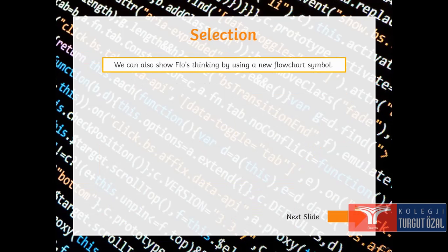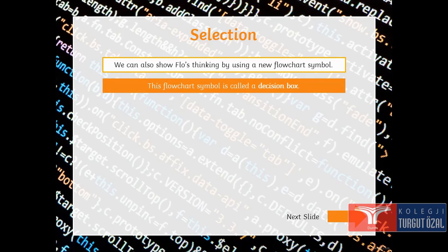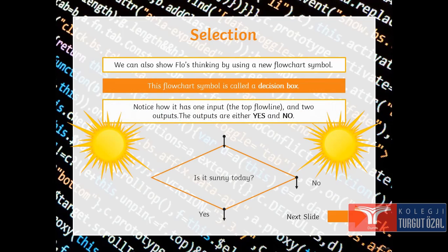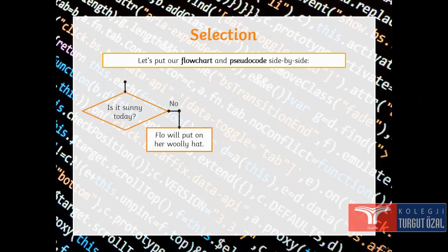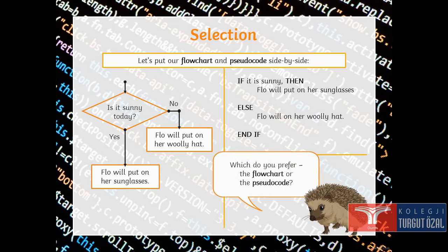We can also show Flow thinking by using a new flowchart symbol. This flowchart symbol is called decision box. Notice how it has one input, the top flow line and two outputs. The outputs are either yes or no. Is it sunny today? If yes, Flow will put her sunglasses. If no, Flow will put on her woolly hat. We have said pseudo-code here. If it is sunny, then Flow will put her sunglasses. Else Flow will put on her woolly hat. End of if.